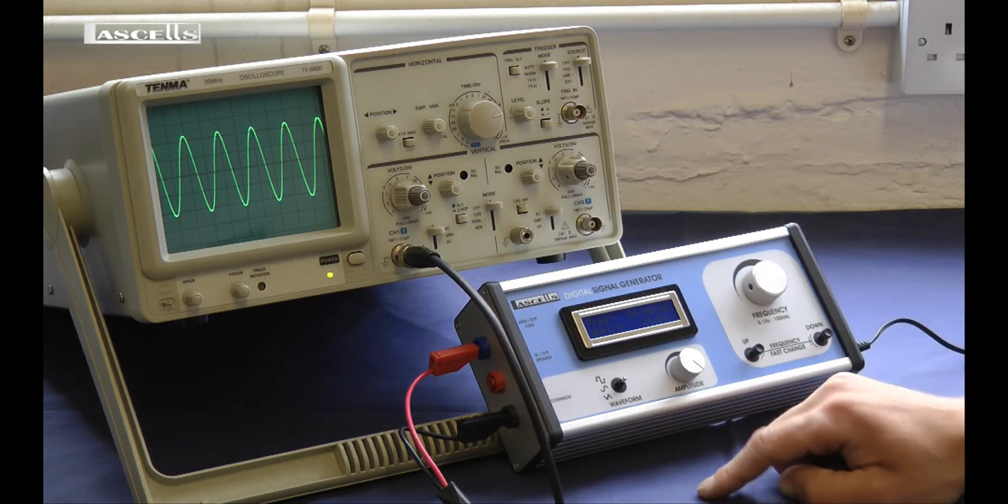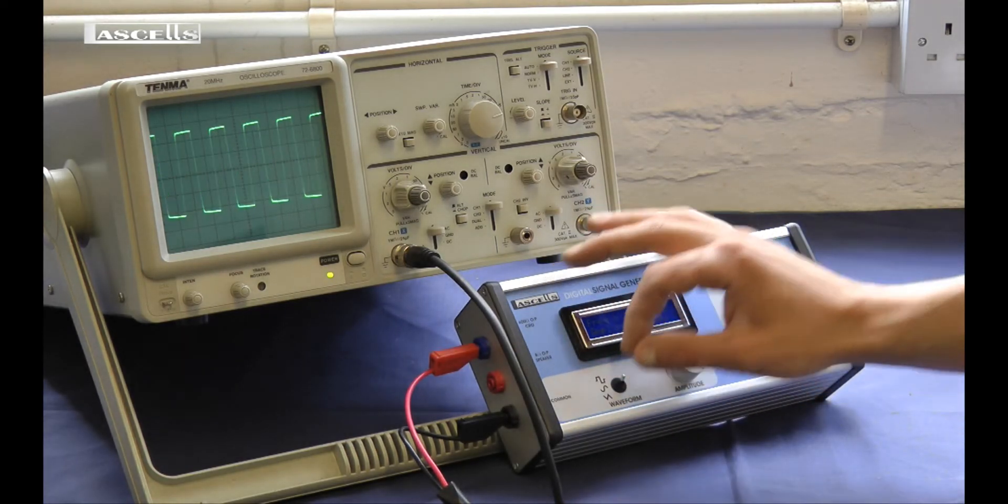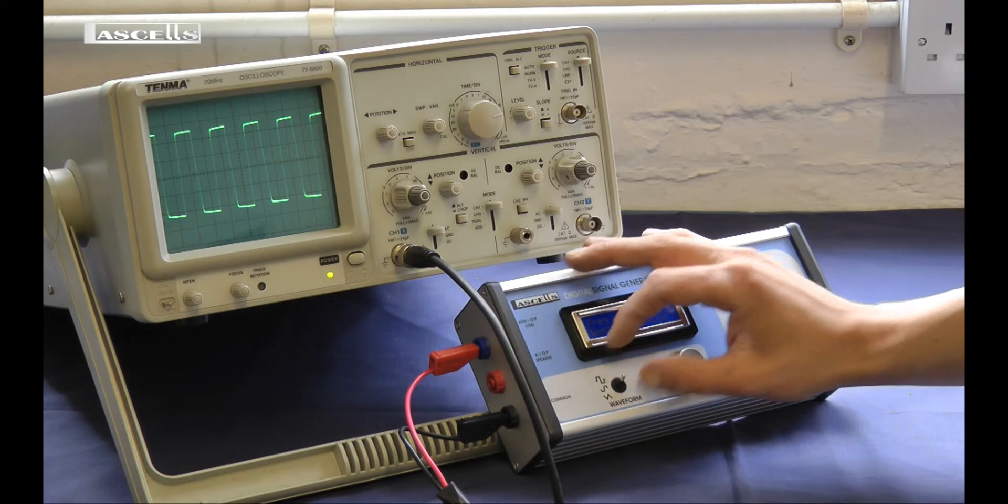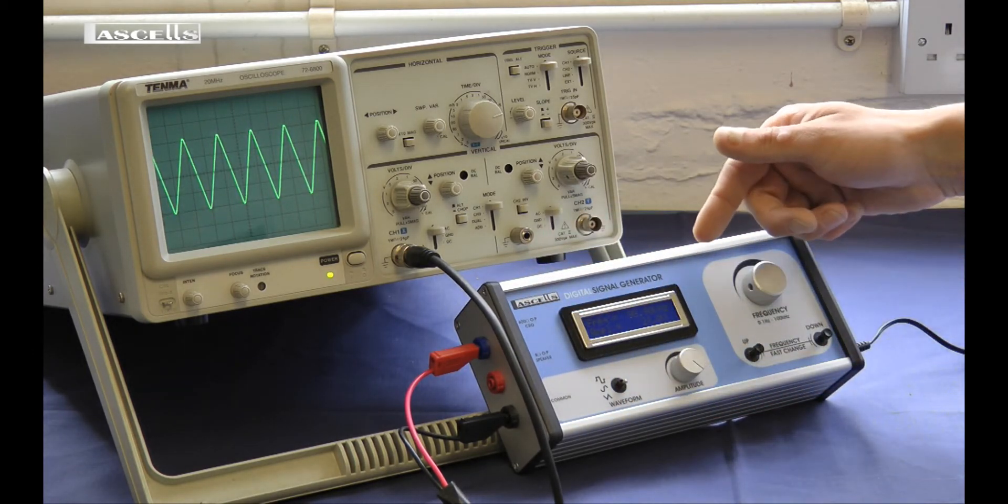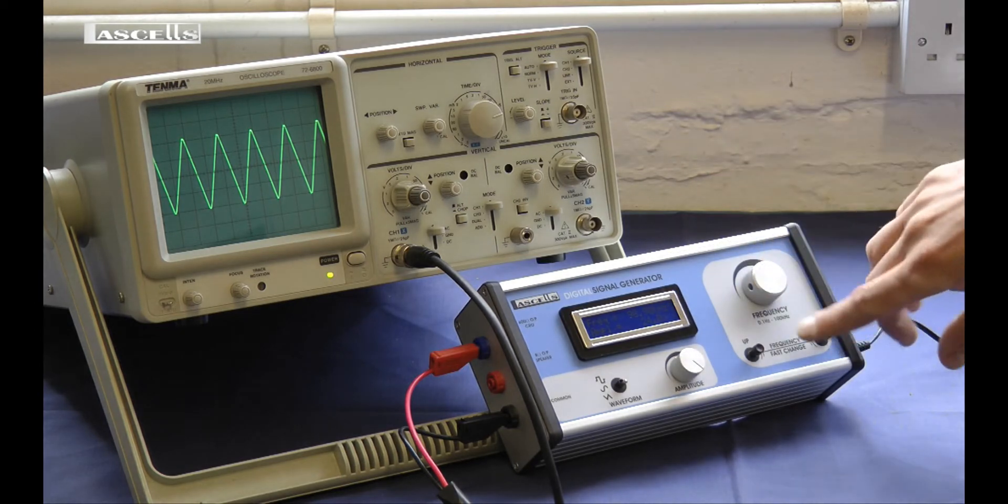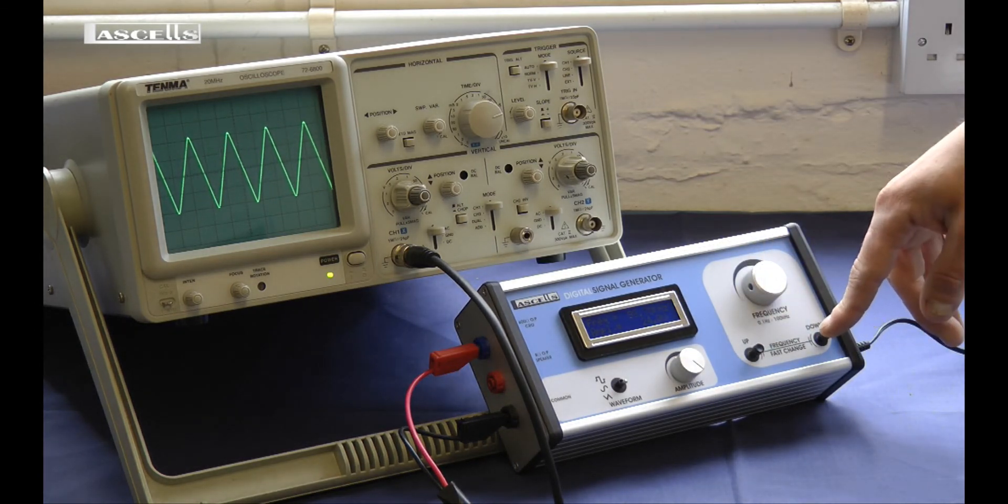There are three waveform outputs on the signal generator. There's a sinusoidal wave, a square wave for electronics work, and a triangular wave. All of these remain the same frequency as you've set and are adjustable in the same way as the sine wave.